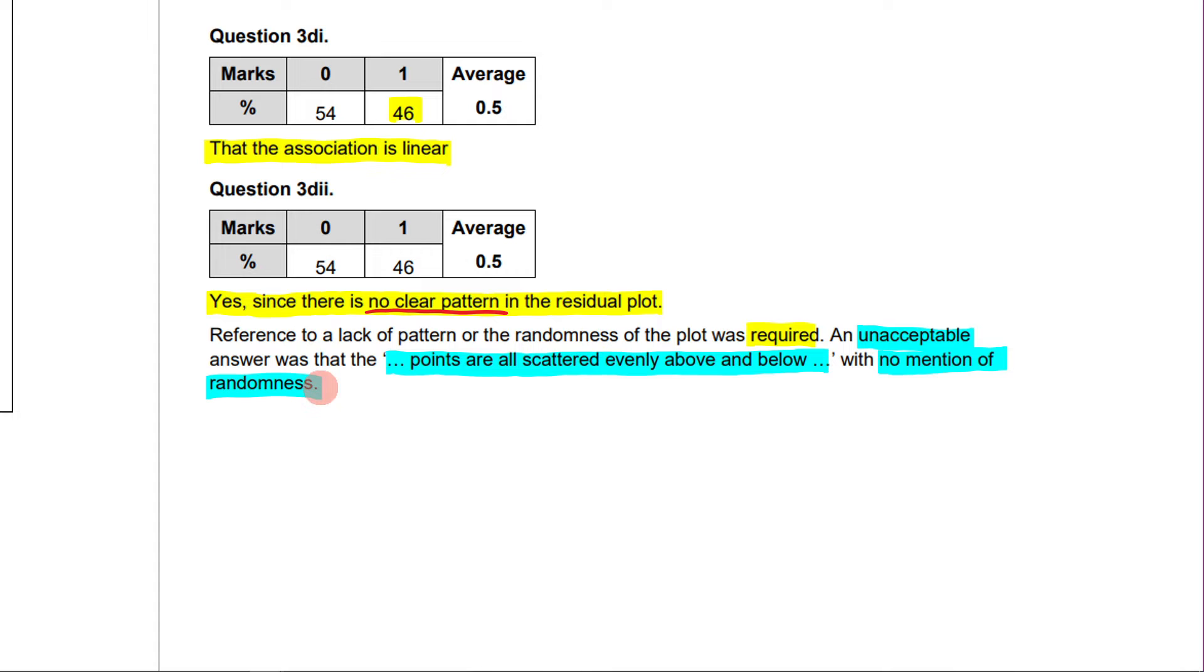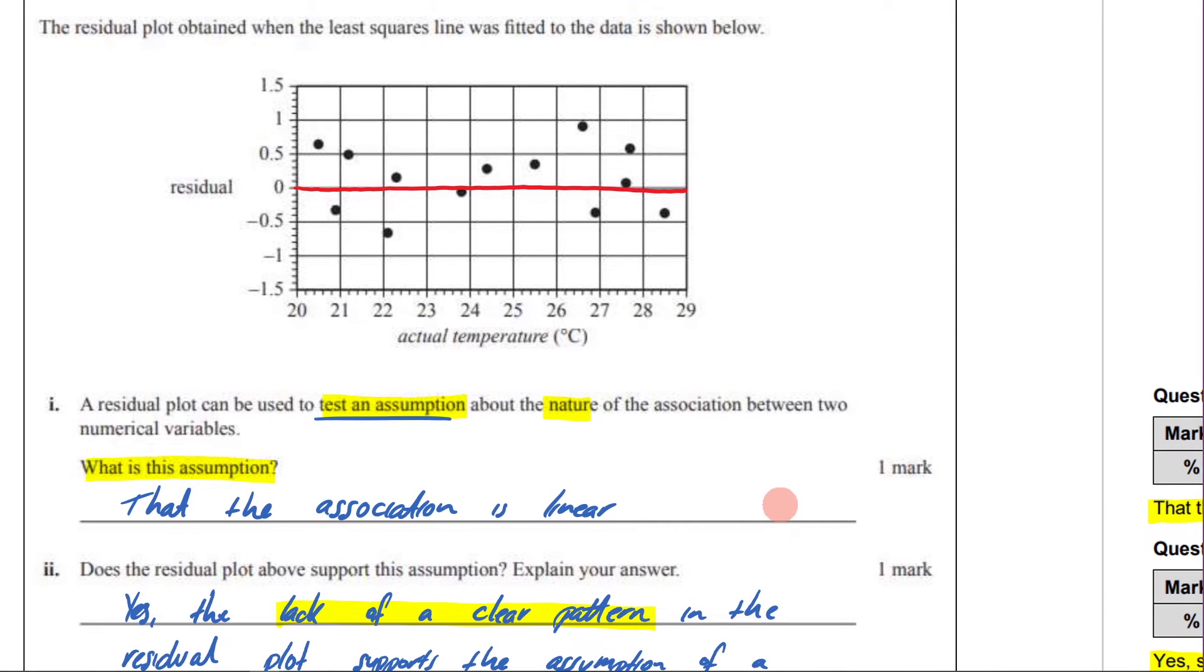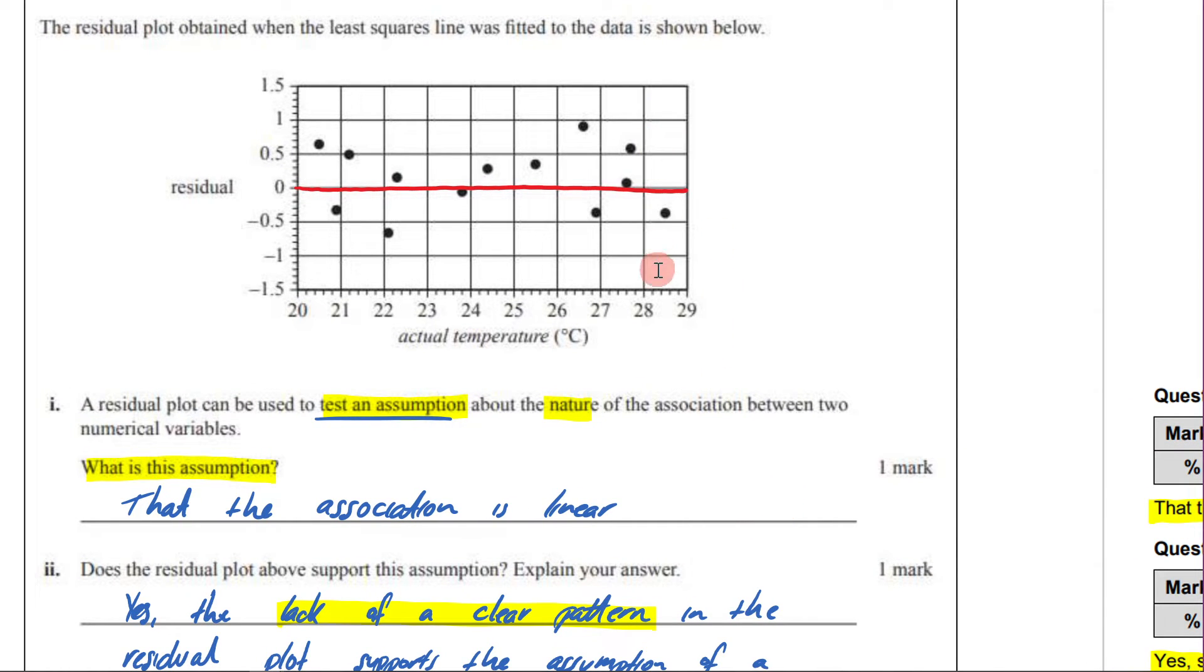An unacceptable answer was that the points are all scattered evenly above and below with no mention of randomness. We've spoken about this previously, that when you do have a linear association, the residual plot will be evenly split above and below where the residual is zero. But that alone doesn't tell you that the underlying data is linear. That has to be paired with the randomness that it is no clear pattern.